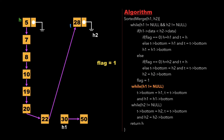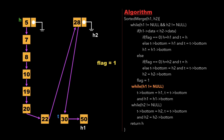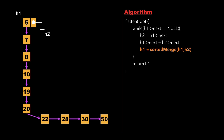Since h2 is now null, we exit the while loop and enter the next while loop where h1 is not null. Node 28's bottom pointer points to 30, t updates to 30, h1 advances to 50, and continues until h1 is null. We exit the loop, return h, and the final linked list is complete. We check whether h1's next is not null, but h1's next is null, so we exit the while loop and return the head pointer h1.